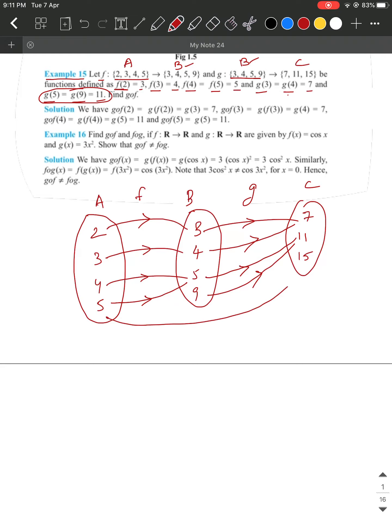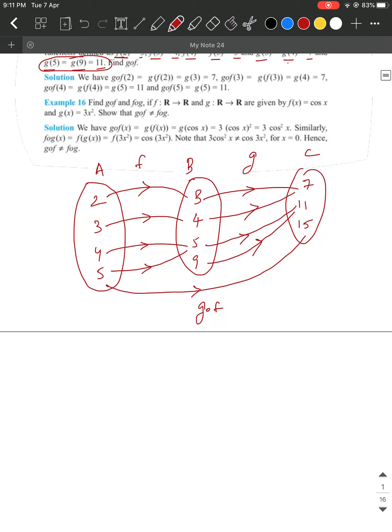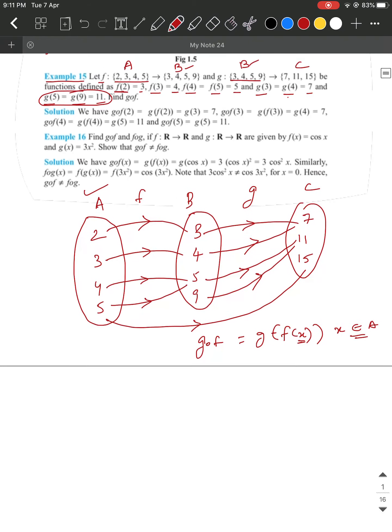Our work is to find what is G circle F. G circle F is also equal to G of F of X, where X value should be from the first most set, where all values of X belong to A. We will proceed like this.